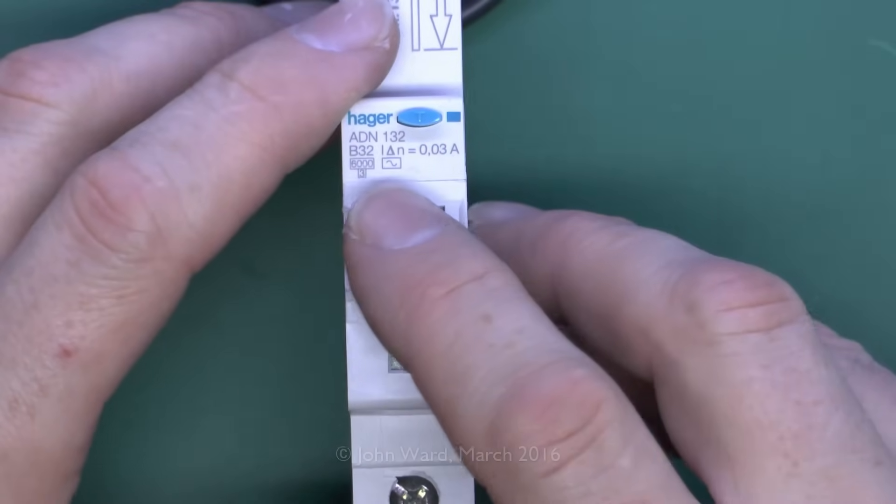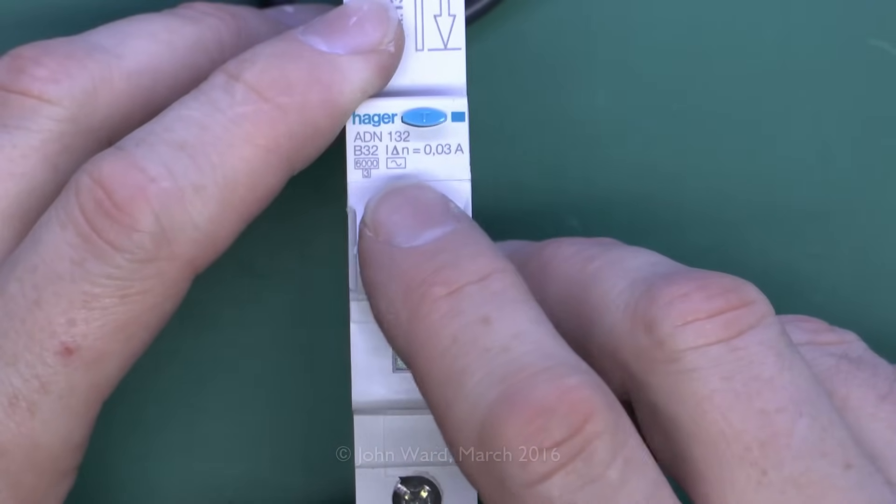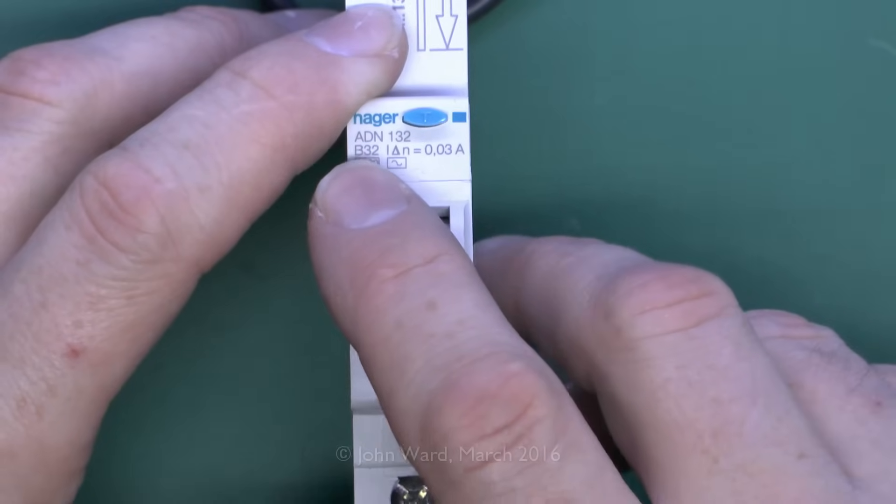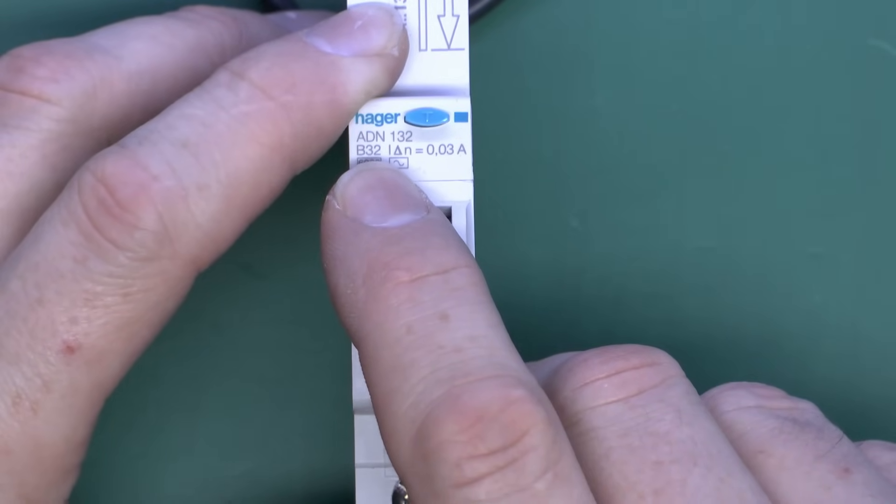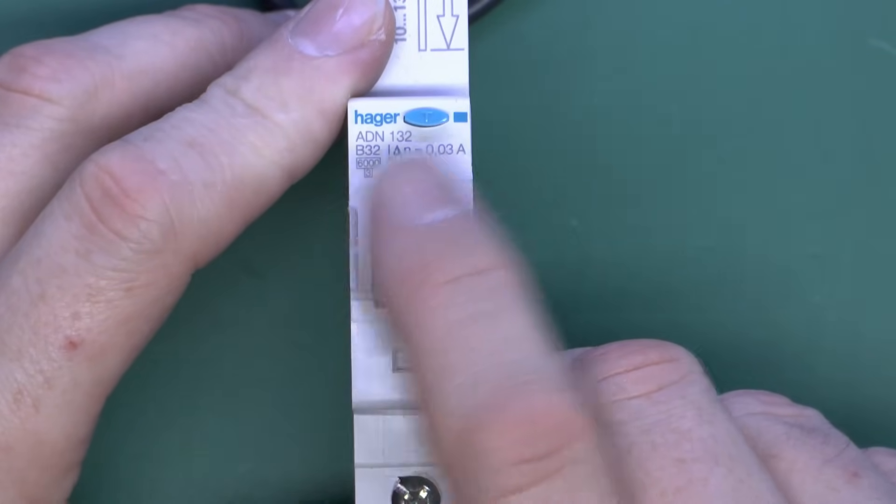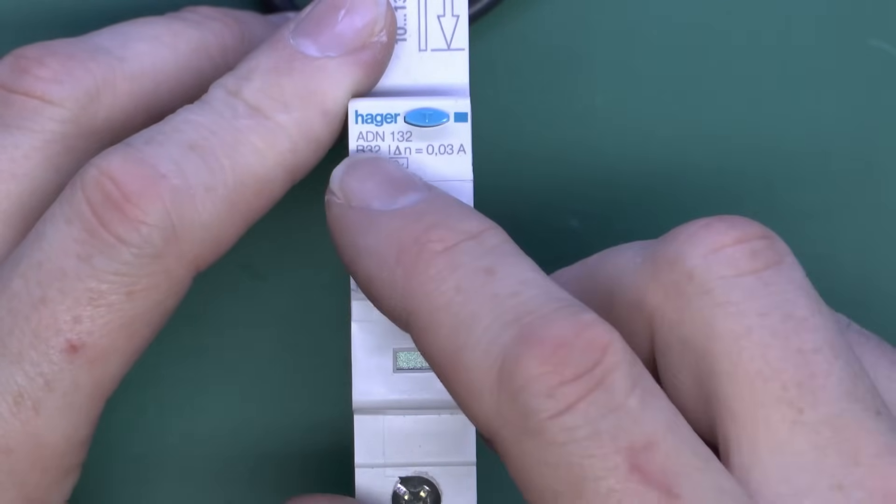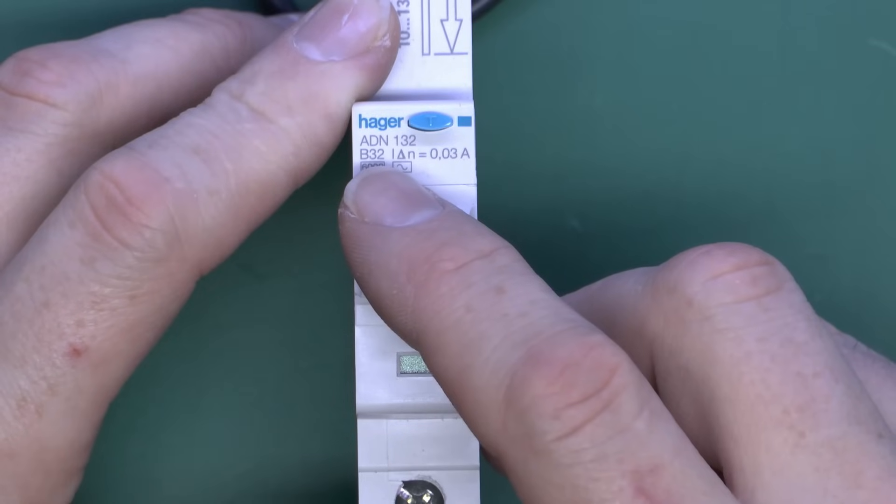Now, have a look on the front of the device, and you see it's got the markings really for both of the components there. We've got the rating here, which is a type B and 32, so it's 32 amps in this case, and that refers to the circuit breaker part, so essentially it's just a normal 32 amp circuit breaker.